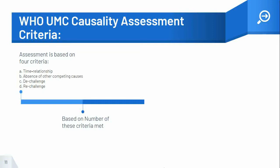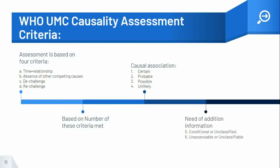Based on the number of criteria met, the level of causal association is grouped into categories. The categories used in the WHO scale are: certain, probable, possible, and unlikely. Besides these four categories, based on the need for additional information, an ADR can also be categorized into a fifth category — conditional or unclassified — and a sixth category — unaccessible or unclassifiable.